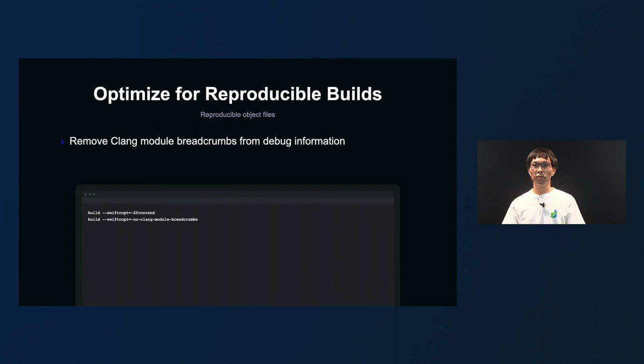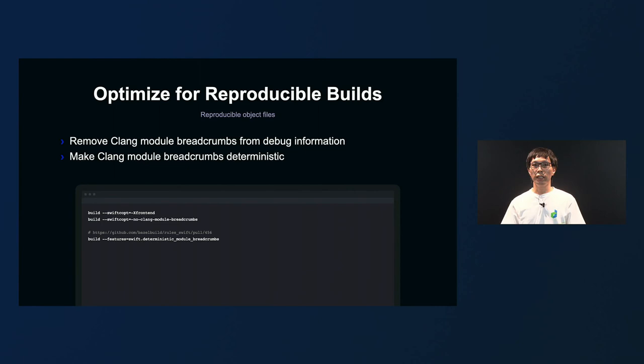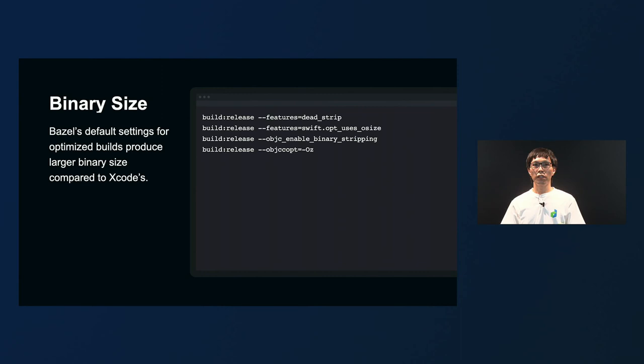So, if you build on separate machines, different binaries will be generated. To keep the build reproducibility of Swift, I recommend that you enable the front-end option under the Swift compiler. Even with that option enabled, sometimes not all PCM file paths get deleted. In the LINE iOS team, we forked the Swift rule, and to improve build reproducibility, we add the flag you can see at the bottom. With this flag, even if the module path remains in the binary, it doesn't depend on the build environment, so we can achieve reproducibility.